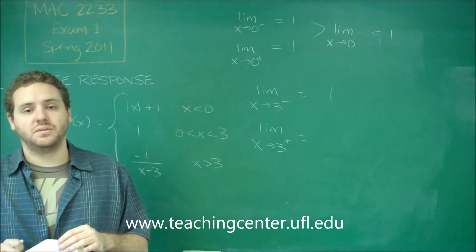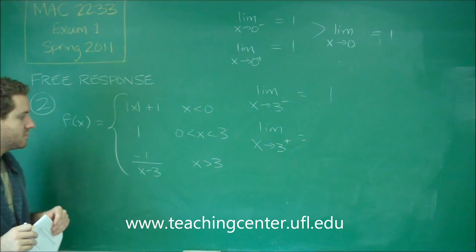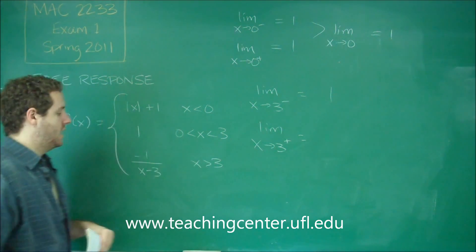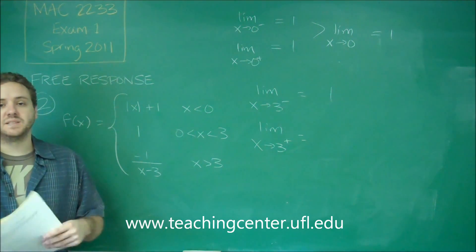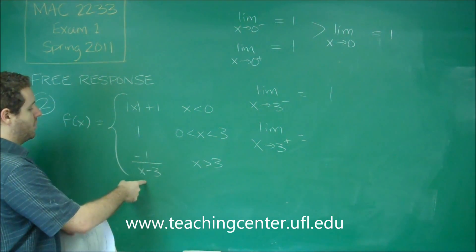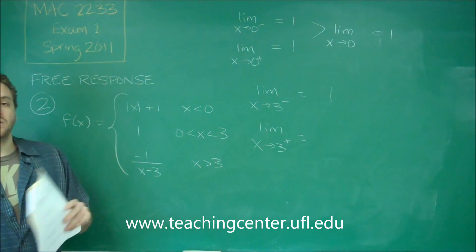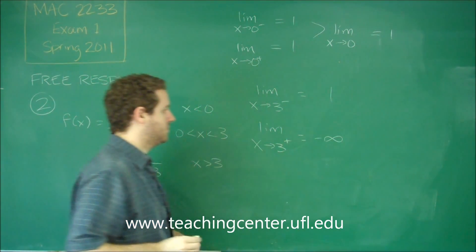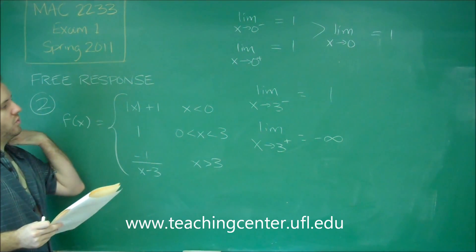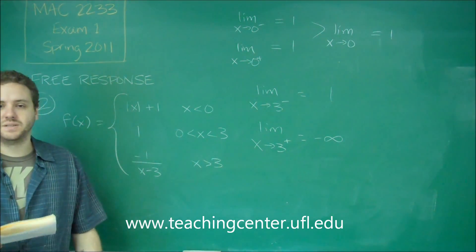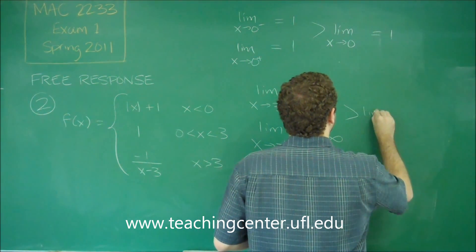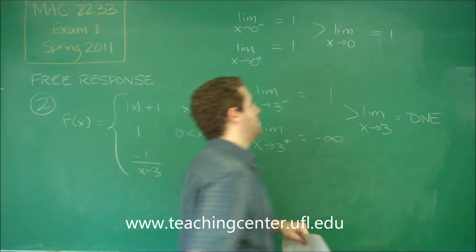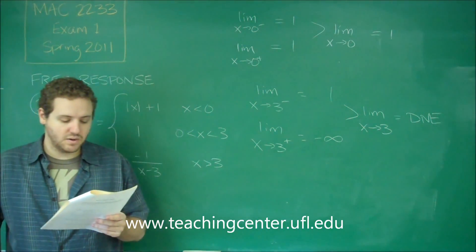When you're dividing by zero with a number on top, you'll always get positive or negative infinity — we just need to determine which one by thinking about the signs. We have a number bigger than three; subtracting three gives a positive result. Negative over positive is negative, so it has to be negative infinity. Since the left and right limits are different — one versus negative infinity — the limit as x approaches three does not exist.